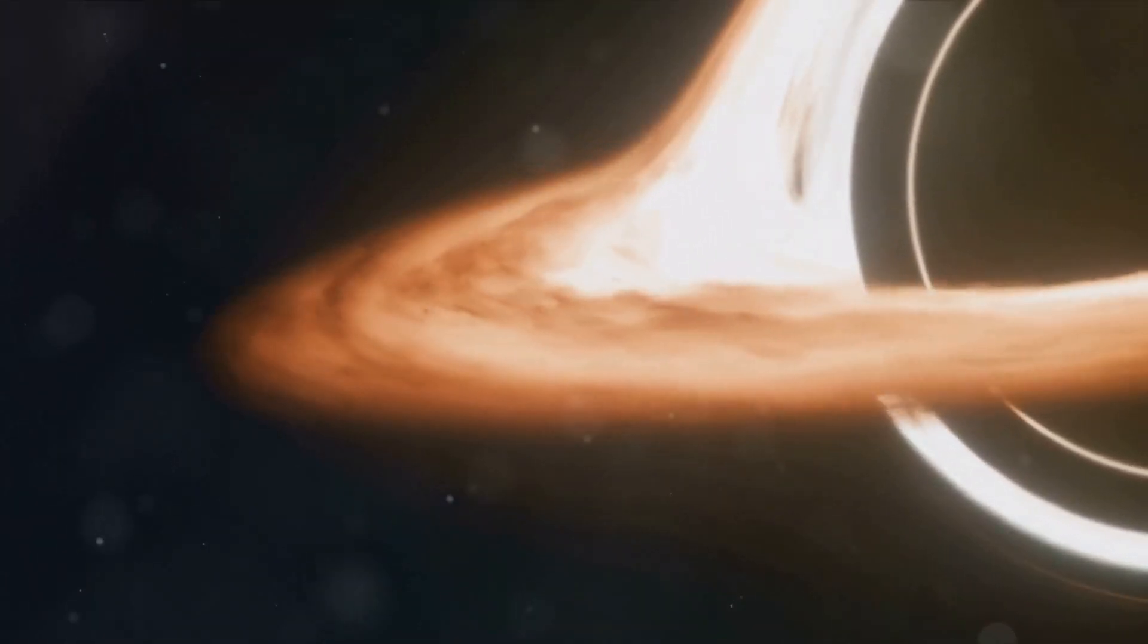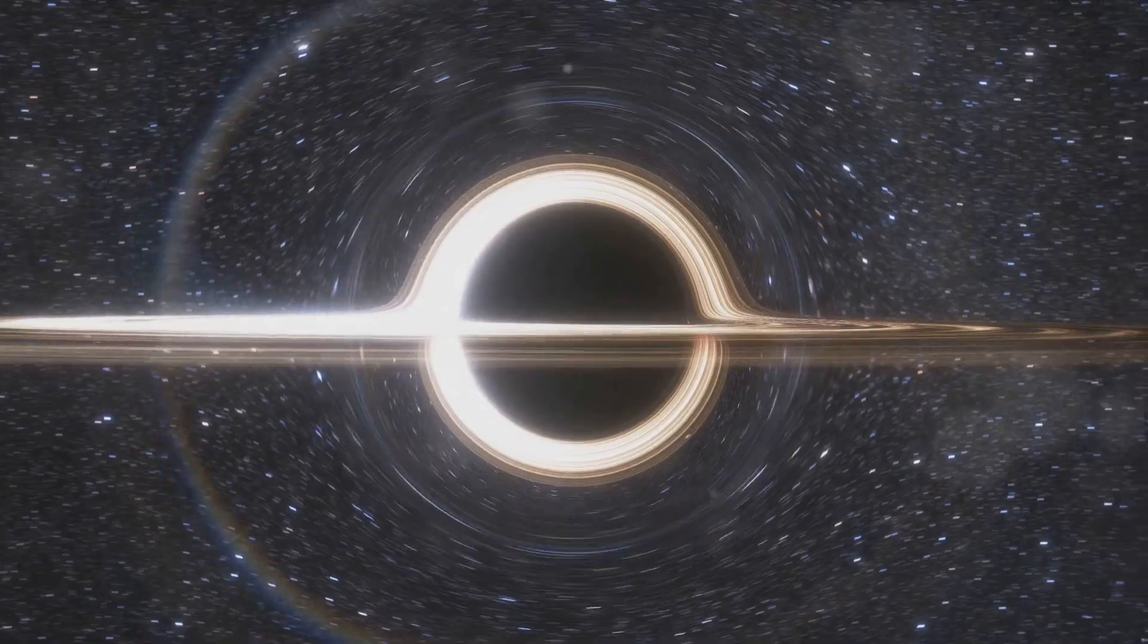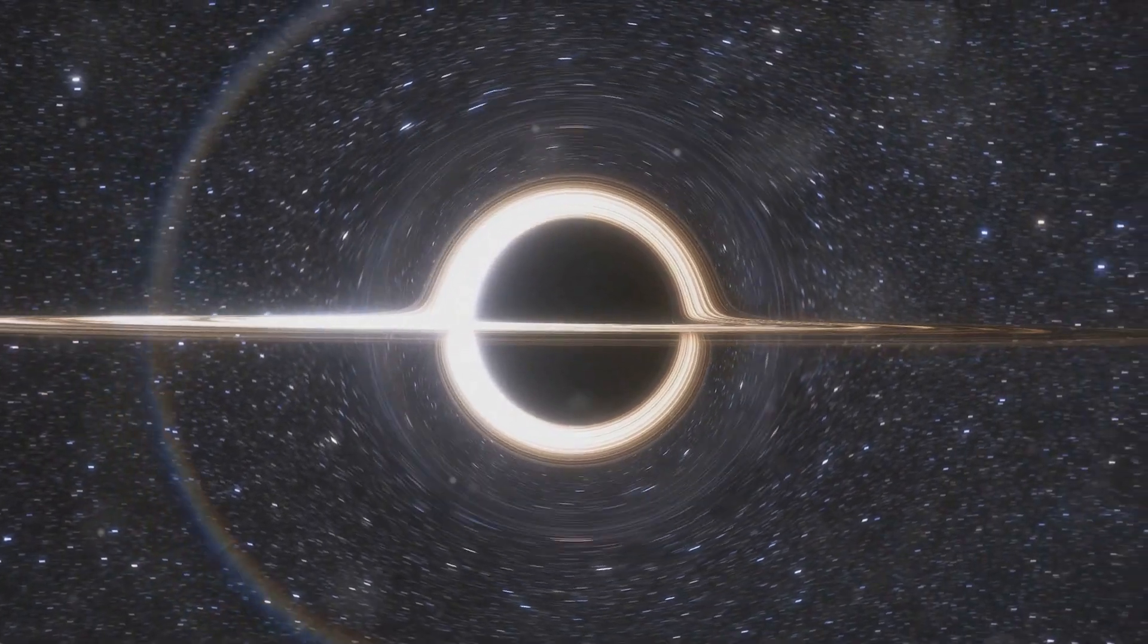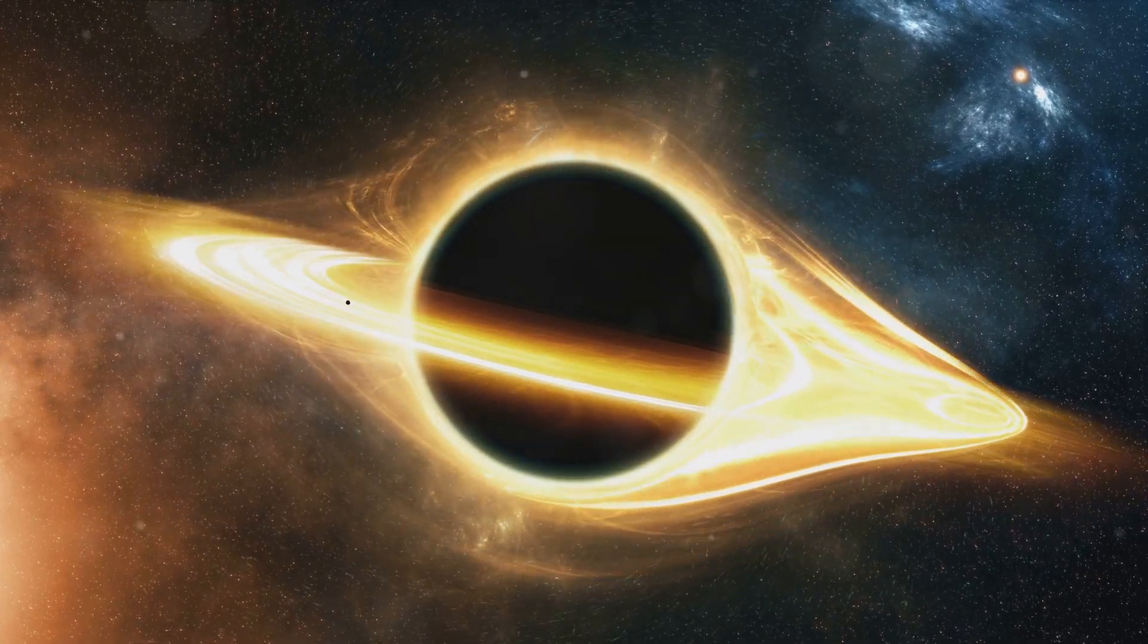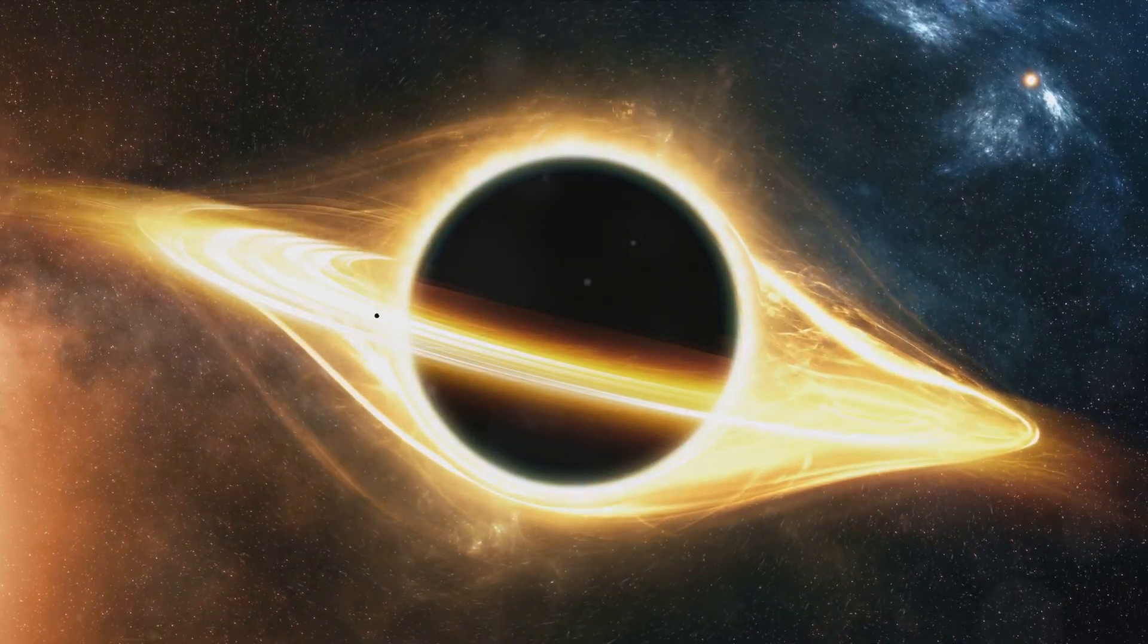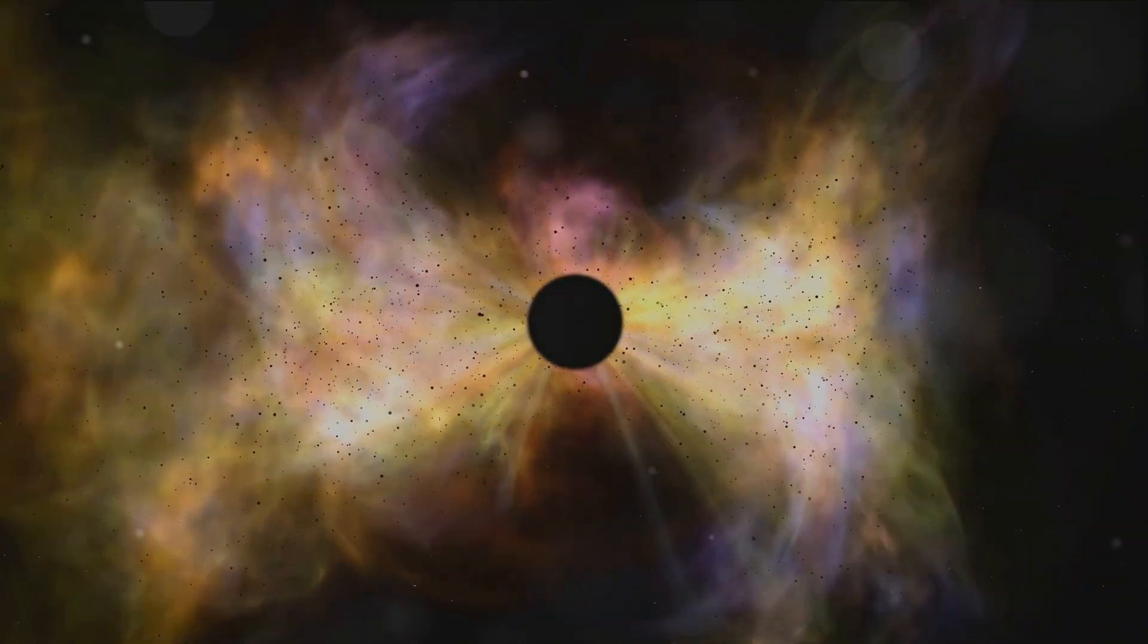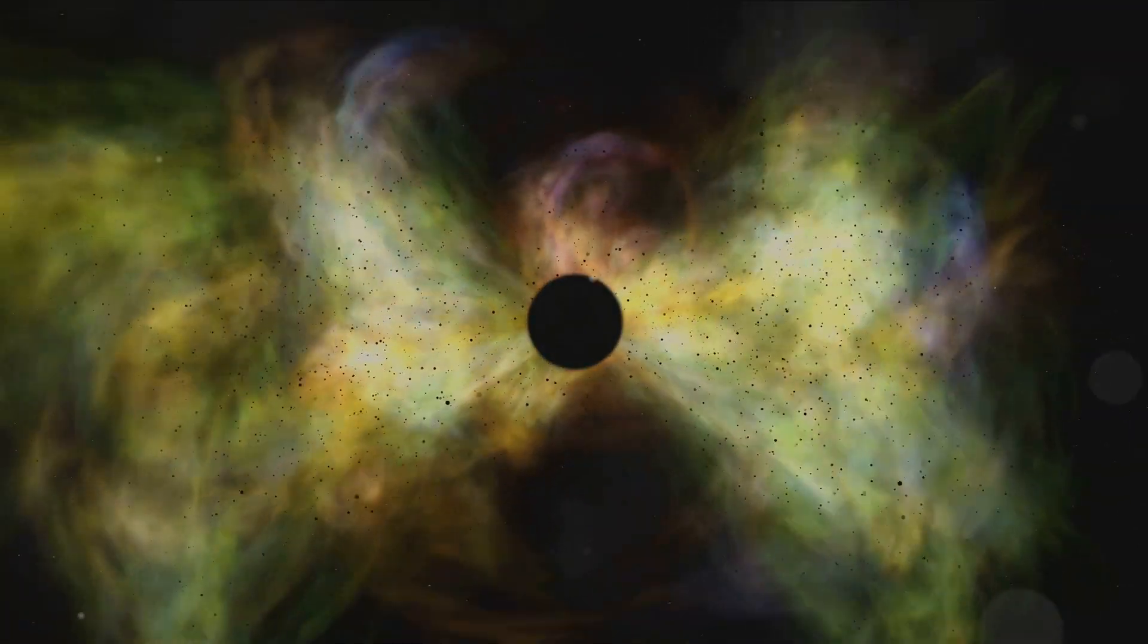Over eons, the emission of Hawking radiation, this ghostly glow at the event horizon, can cause a black hole to lose more mass than it accumulates. This slow, steady process can eventually lead to the black hole fizzling out, defying the once accepted notion that black holes are eternal.